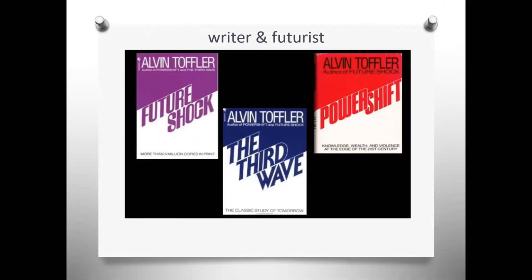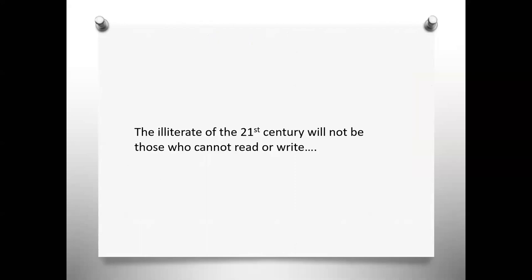Some or many of you are probably too young to know this writer — his name is Alvin Toffler. He's a writer and futurist — a very nice title to have, because all you do is predict the future, and if you get it right they'll never forget it. His most popular book is Future Shock, in which he wrote: 'The illiterate of the 21st century will not be those who cannot read or write, but those who cannot learn, unlearn, and relearn.'